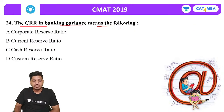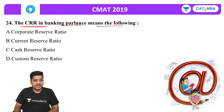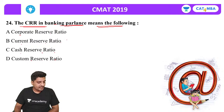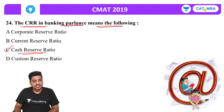Next question: CRR in banking parlance stands for what? Options are Corporate Reserve Ratio, Current Reserve Ratio, Cash Reserve Ratio or Custom Reserve Ratio. The correct answer is C — Cash Reserve Ratio.